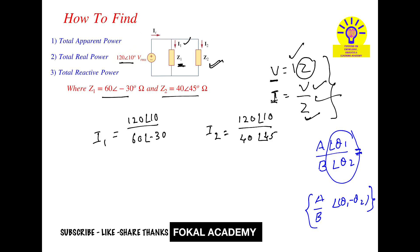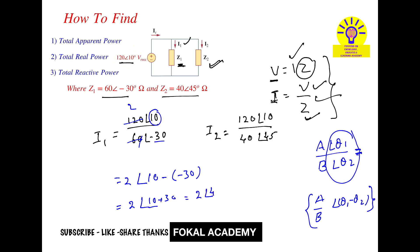Phasor division is much easier compared to complex number division. For I1: 120 divided by 60 gives 2, and the angle is 10 minus (minus 30), which becomes 10 plus 30 equals 40 degrees. So I1 equals 2 at phase angle 40 degrees amperes. Since it results from an RMS voltage, this is an RMS current.